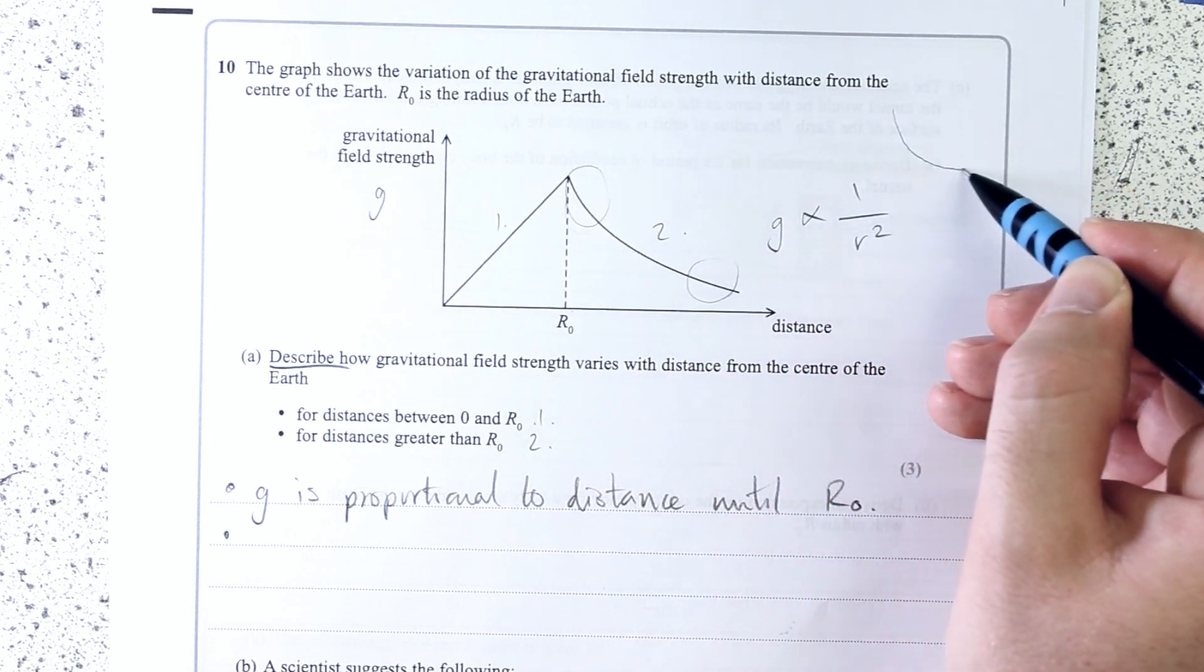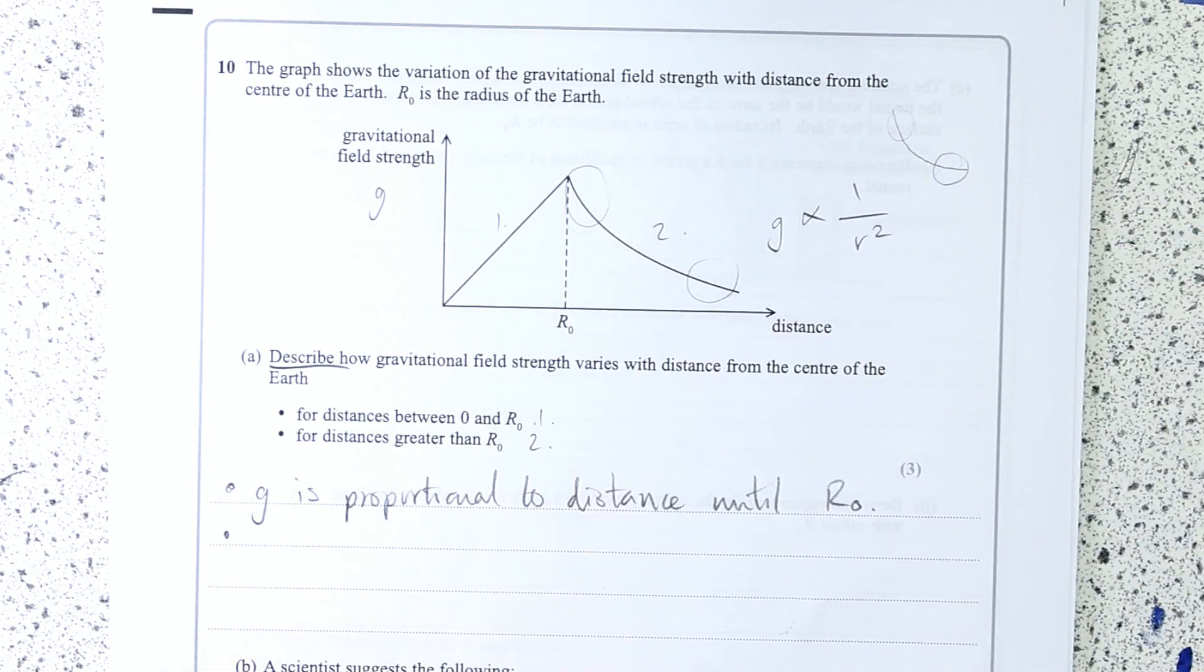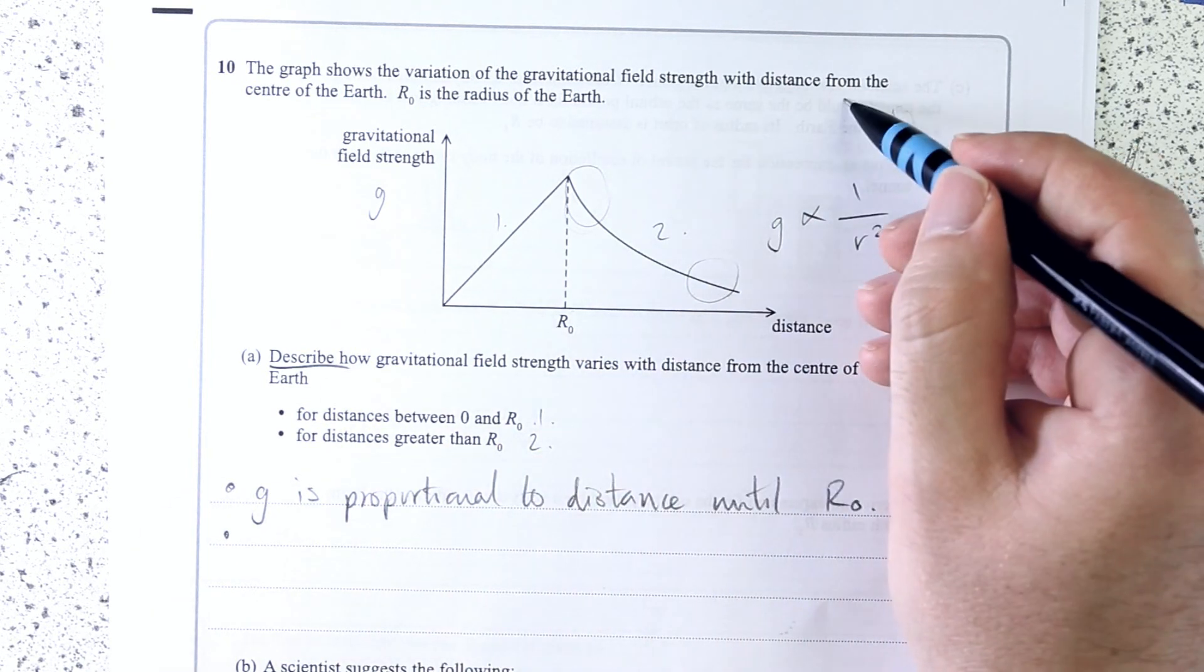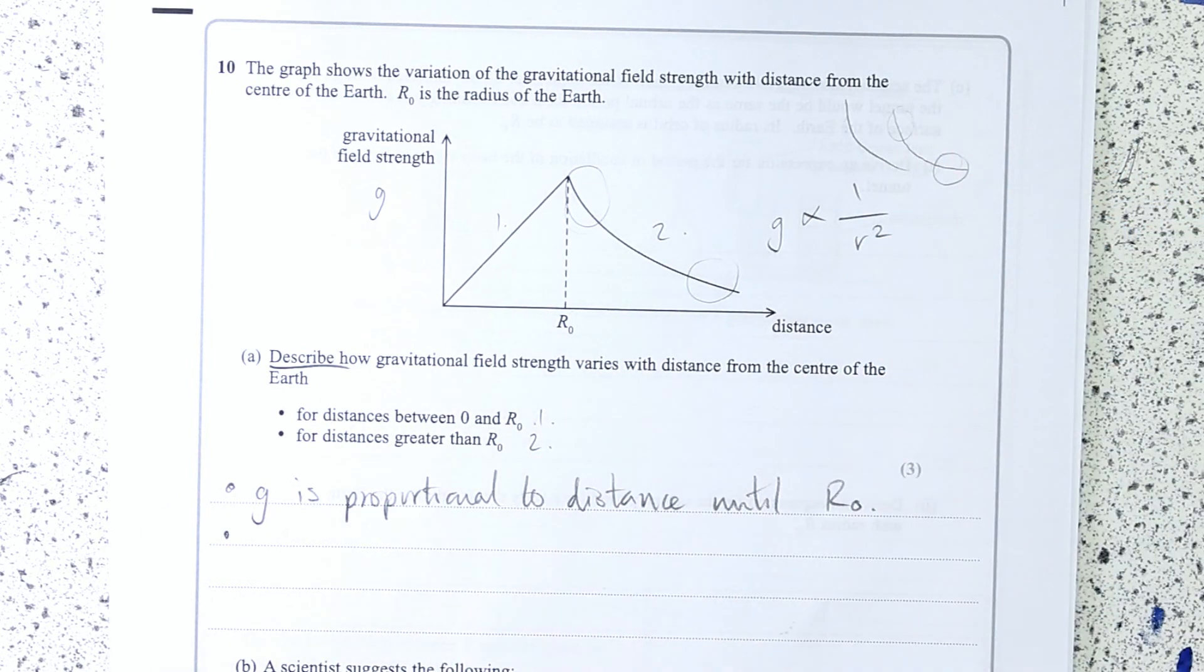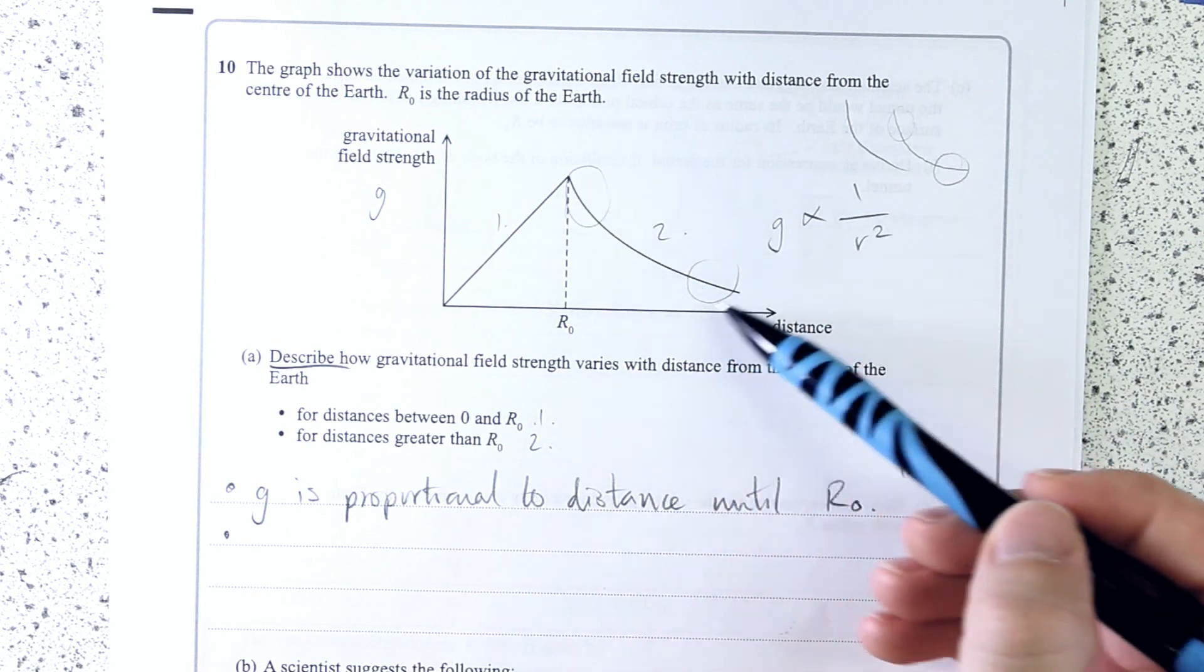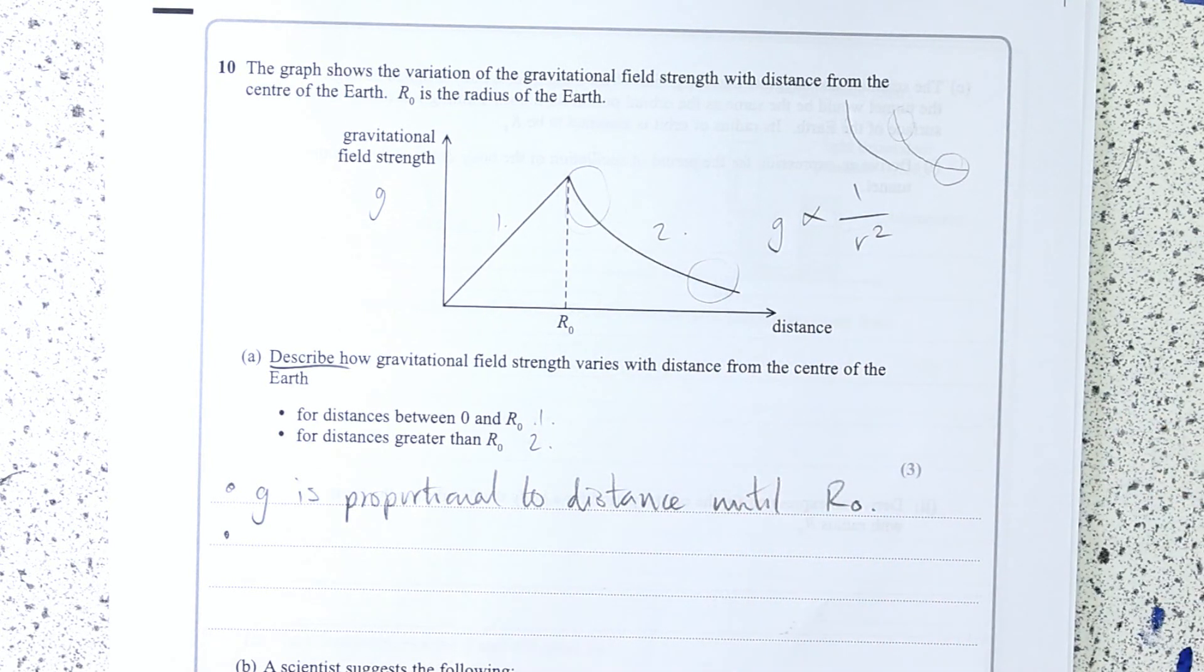But you can actually see the inverse square because of the difference in kind of, not that it's in gradient, but it's much steeper compared to how shallow in there. Inverse laws have equal but inverse steepness is there. Inverse square, much steeper at first, then kind of decreasing rate of change later. So you can actually use the shape of this to work out that that is an inverse square law.